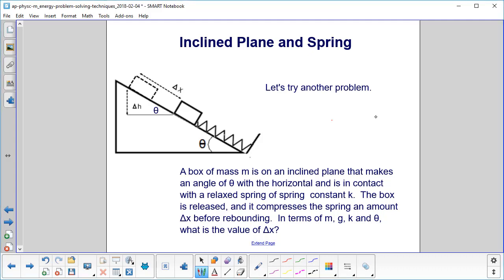Let's try another problem. We have a box of mass m right up here, and it's initially in contact with a relaxed spring. It has a spring constant of k. We then release the box.